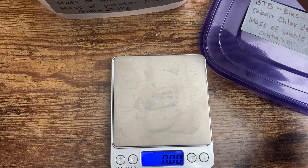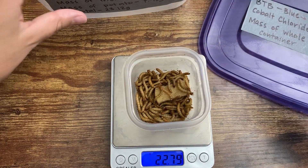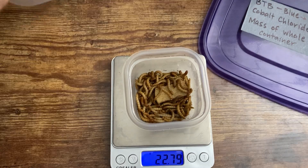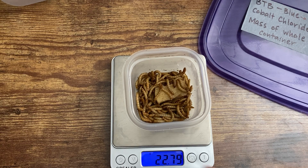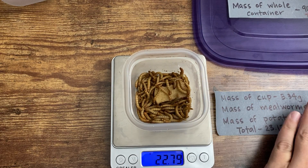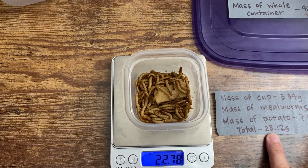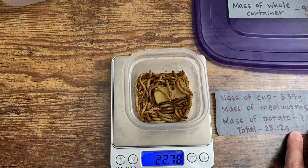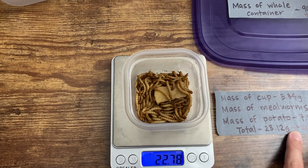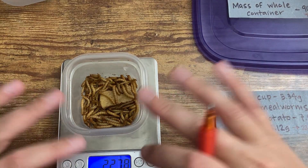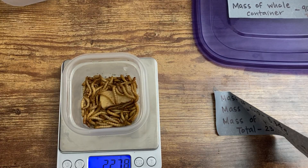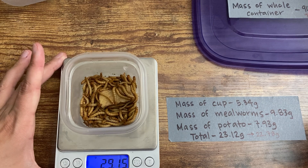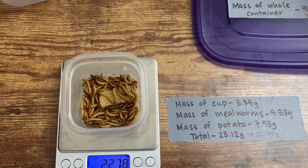I now need the mass of my mealworms, the potato — you can see that they've eaten quite a lot of that potato — and the cup. The mass of this whole thing started off at 23.12 grams and has gone down to 22.78 grams. That means mass must have left this container. If it loses mass, then there are fewer atoms, and those atoms had to go somewhere because atoms can't be created or destroyed.